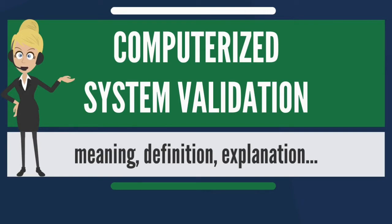A computerized system does exactly what it is designed to do in a consistent and reproducible manner. The validation process begins with the system proposal/requirements definition and continues until system retirement and retention of the e-records based on regulatory rules. Documented system requirements are required for CSV as they clearly stipulate the intended use of a computer system application.